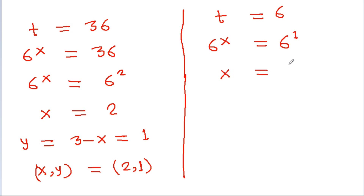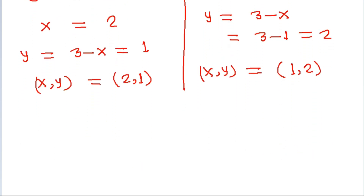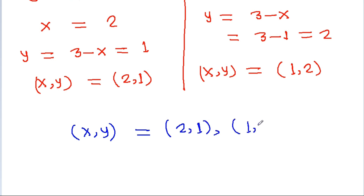So x equals 1 and y equals 3 minus 1 equals 2. Therefore the two solutions are x equals 2, y equals 1 and x equals 1, y equals 2.